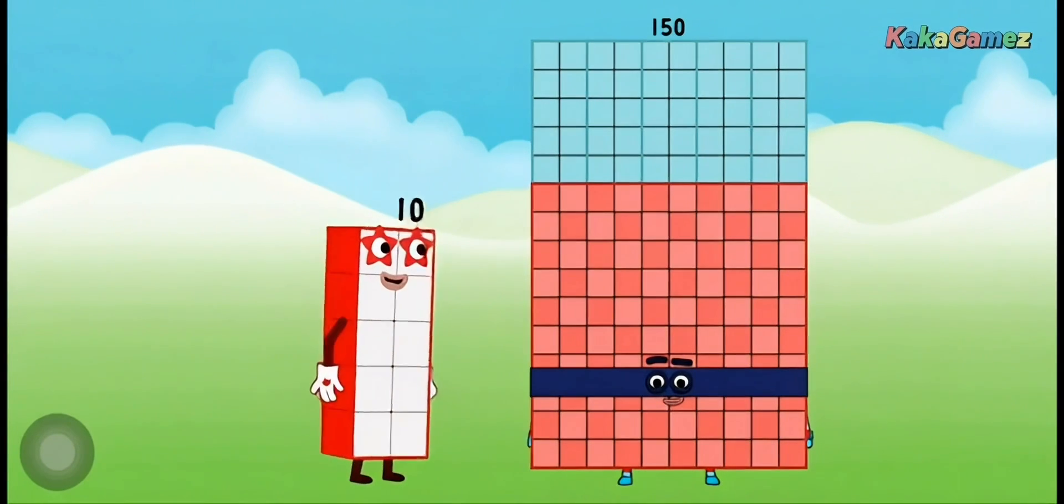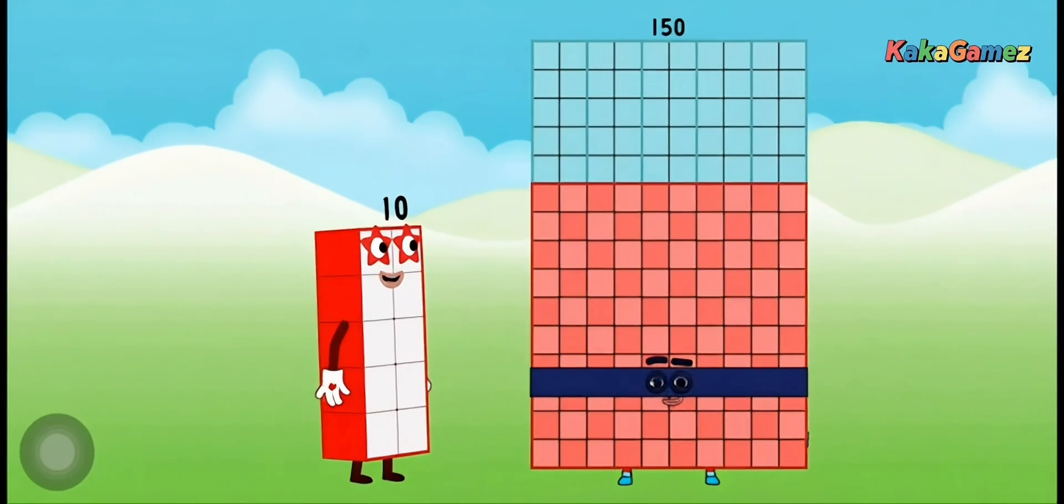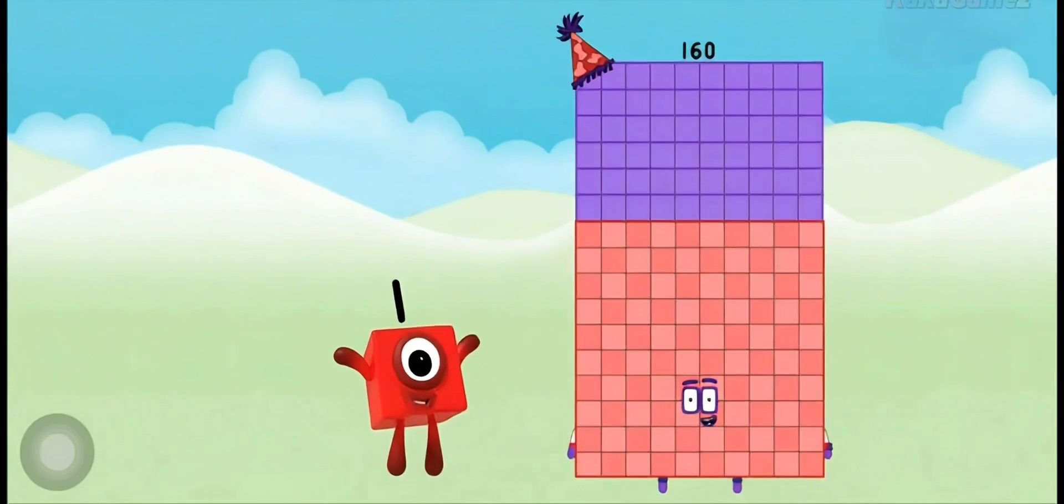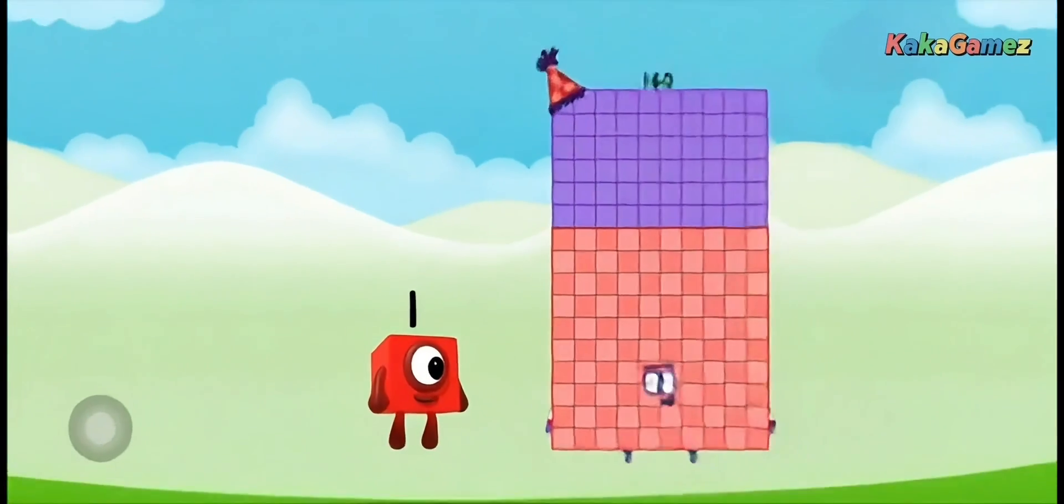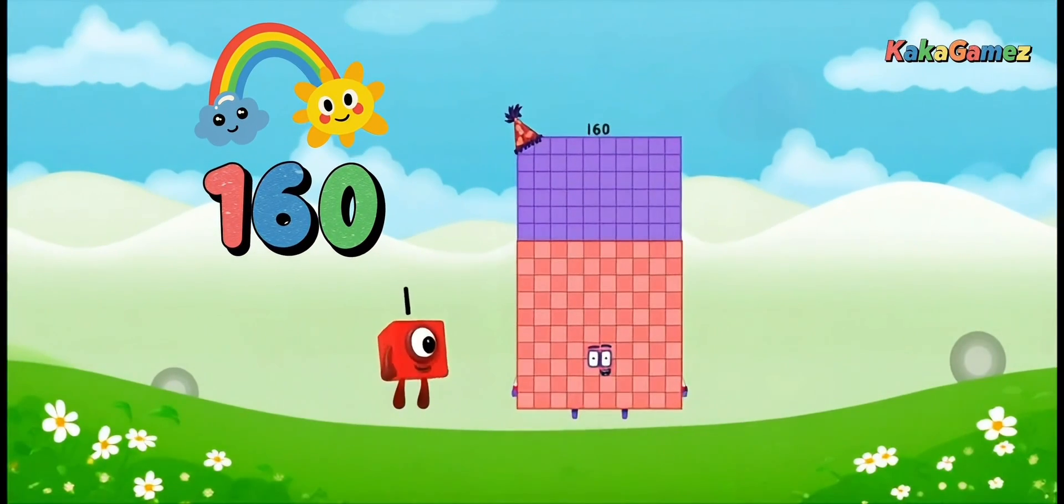Now, let's add number blocks 10 to number blocks 150. What do we get? That's right! 150 plus 10 equals number blocks 160.